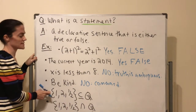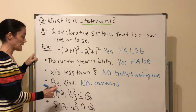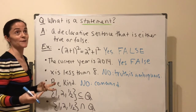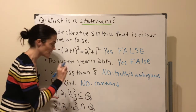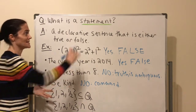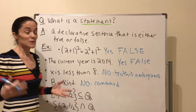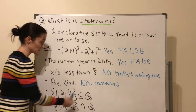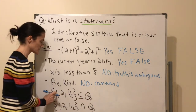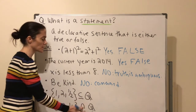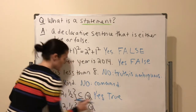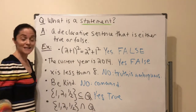Next example: 'The set {1, 2, ½} is a subset of ℚ.' This is a statement — and importantly, a statement can be expressed with symbols. You're declaring that this set is a subset of ℚ, and it's true because every element listed is a rational number.